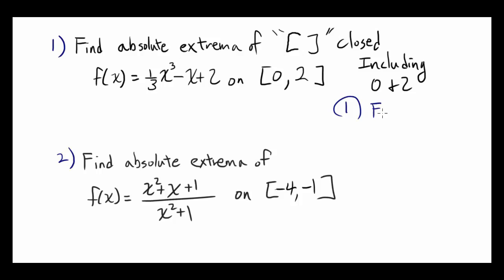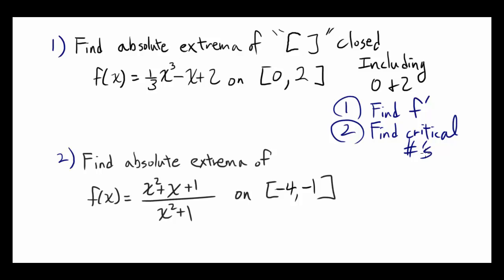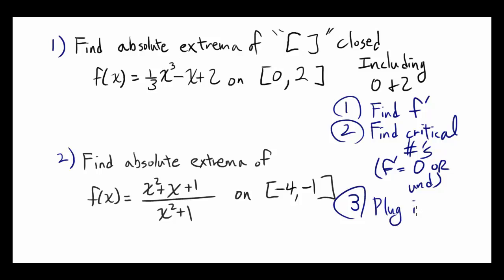First, find f prime. Second, find the critical numbers — critical numbers are where f prime is 0 or undefined. After that, plug in the critical numbers and the endpoints, in this case 0 and 2, into f. Whatever comes out to be the highest is the absolute maximum, and whatever comes out to be the lowest is the absolute minimum.